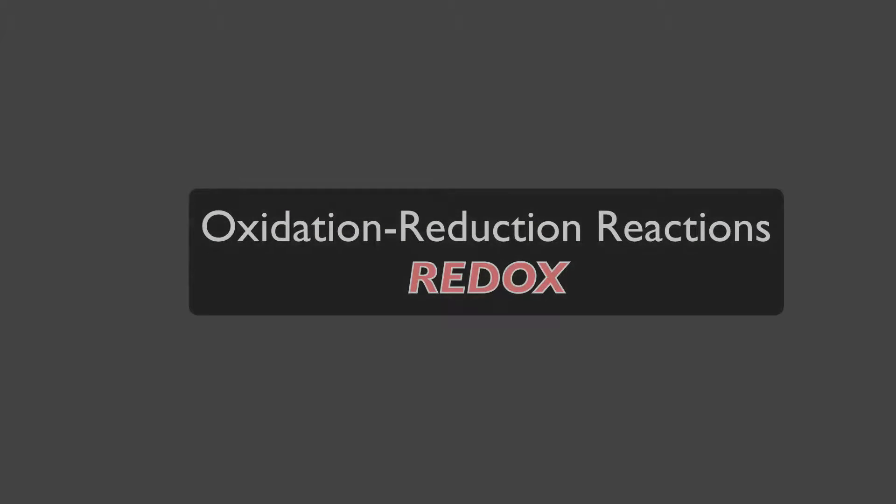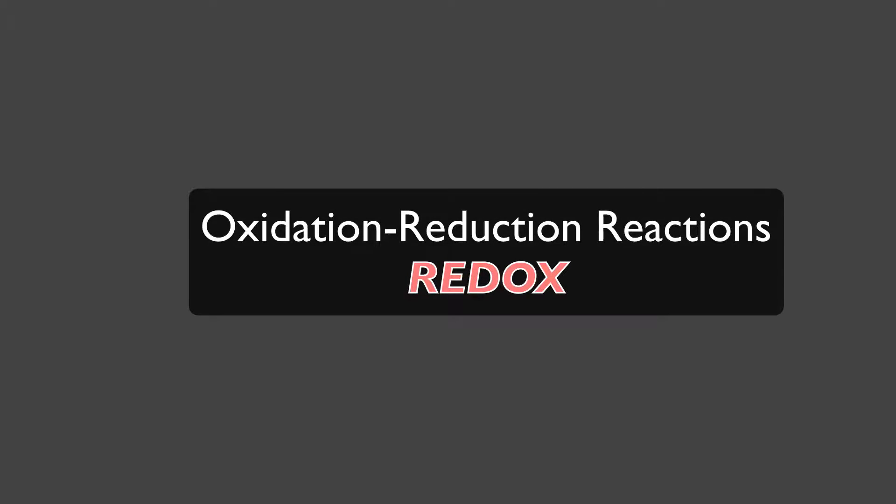Let us now consider oxidation-reduction reactions, commonly known as redox. To put them in perspective, let's first compare them to a type of reaction that we're very familiar with, and that is an ionic reaction. We are already familiar that a sodium ion can combine with a chloride ion to give you the charged neutral compound known as sodium chloride.